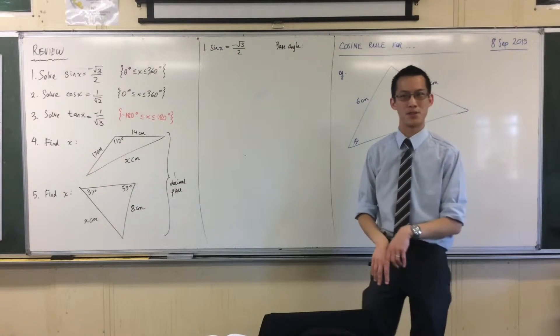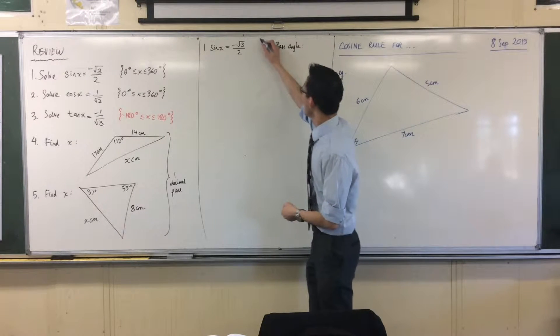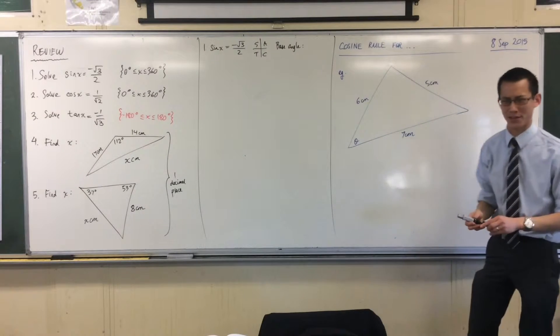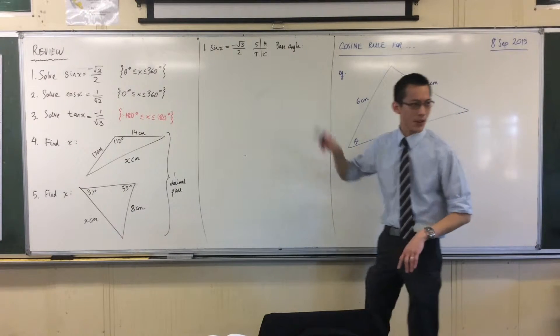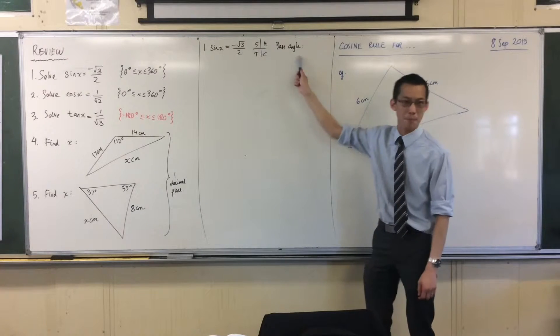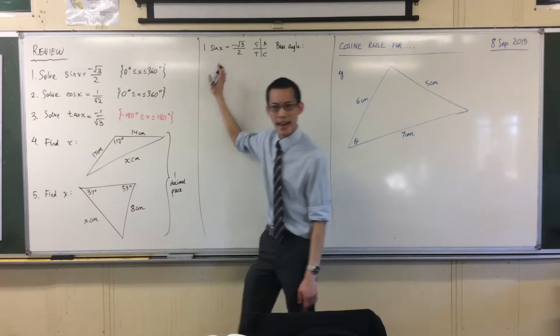I've been trying to alternate between the strategies we've been using so we master all of them. I think today we're up to the quadrants method, because the previous time we did graphs. Before we jump into the quadrants, the first thing I need is to get a base angle, an acute angle that goes with this equation.